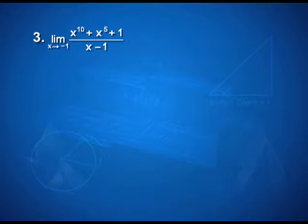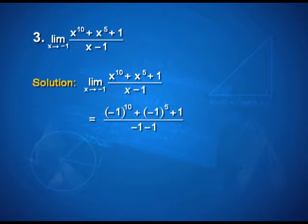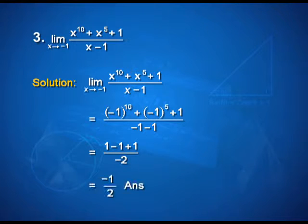Question number 3: limit (x to the power 10 plus x to the power 5 plus 1) upon (x minus 1) as x tends to minus 1. For the solution, this can be simplified as (minus 1 to the power 10) plus (minus 1 to the power 5) plus 1 upon (minus 1 minus 1), that is equal to 1 minus 1 plus 1 upon minus 2, which equals minus 1 upon 2.